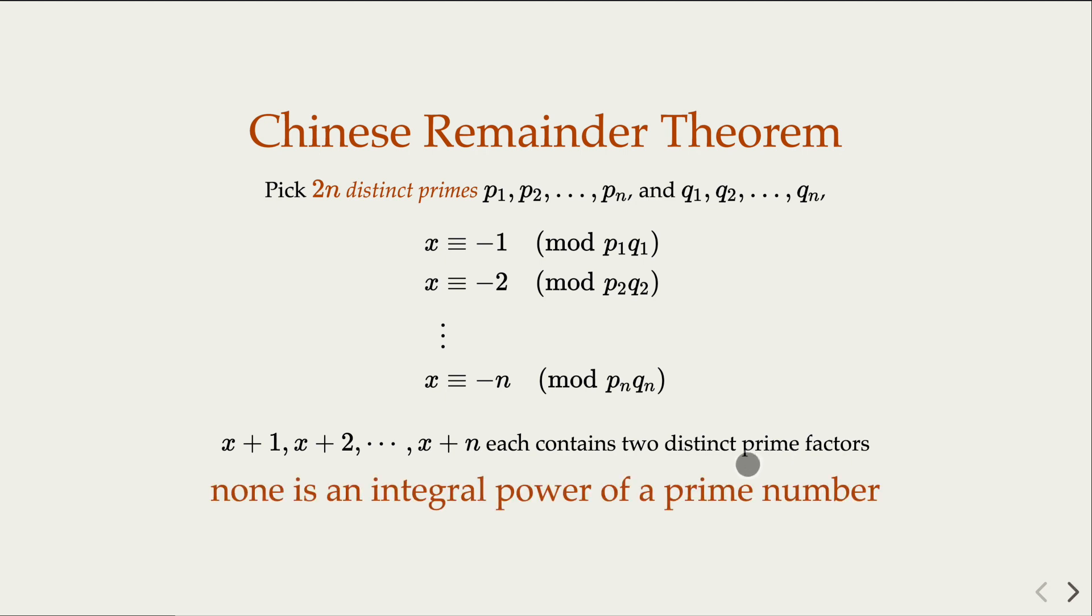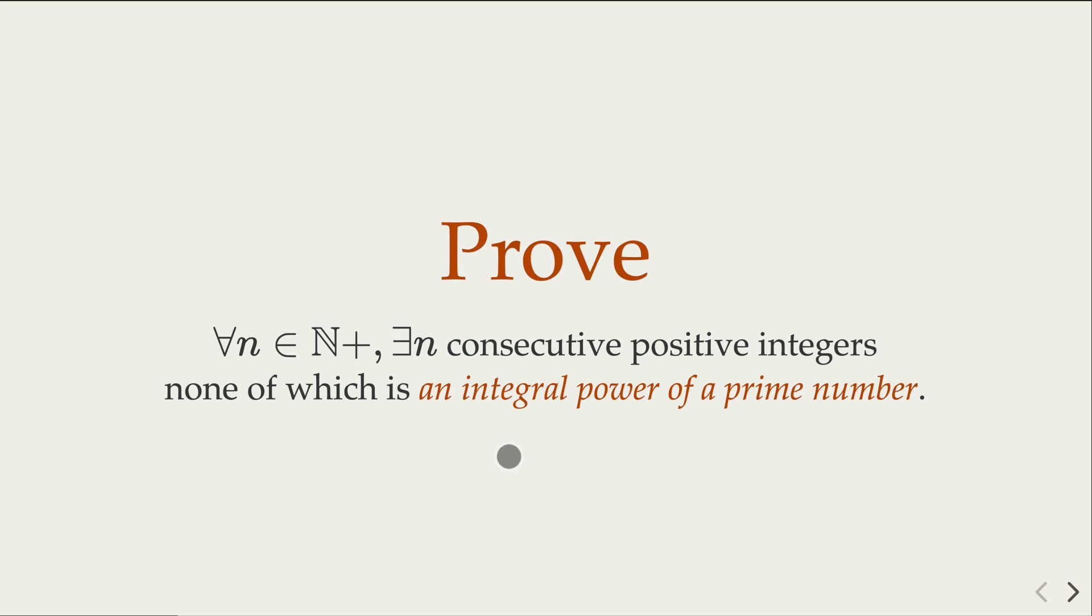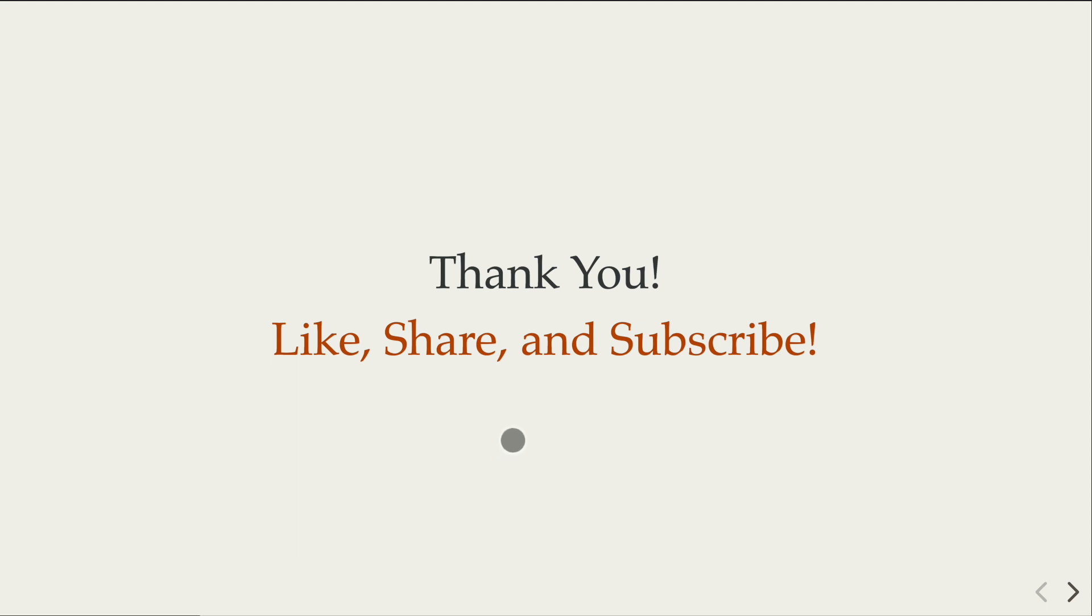So none of which is gonna be an integral power of a prime number. We have proven the statement through the construction. So with this equation, we find x, and then we find n consecutive integers, and the statement is true. Hope you follow the steps, and please like, share, and subscribe to the channel.